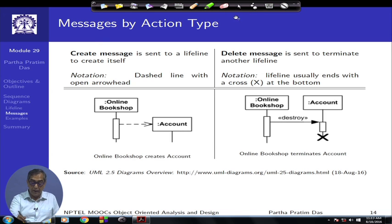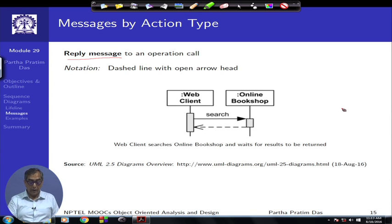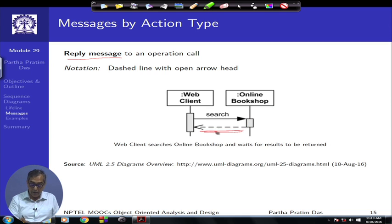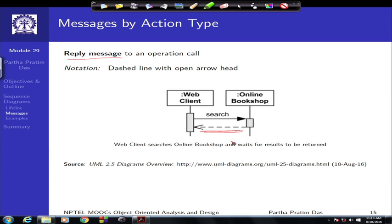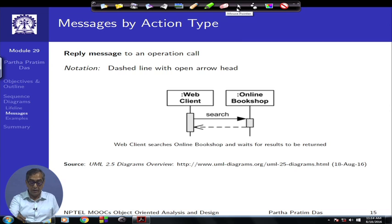We have seen synchronous, asynchronous, create, and delete. The only other important message is a reply or response message, shown with a dotted line and an open arrow. It is optional in many cases. For a synchronous call a reply is necessary because the requester was waiting for the task to complete — that completion must be reported via a reply message. For an asynchronous call the reply may not be needed since the requester is already executing in some other state.